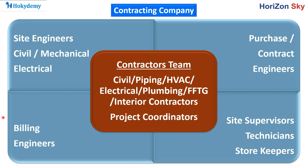The contracting company or contractor's team can be divided into five categories: first, project coordinators from each engineering faculty; second, the site engineers team, mainly for civil, mechanical, and electrical engineering; third, the billing engineering team; fourth, purchase or contract engineers; and lastly, the supporting staff — site supervisors, technicians, and storekeepers.